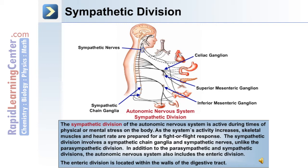In addition to the parasympathetic and sympathetic divisions, the autonomic nervous system also includes the enteric division. The enteric division is located within the walls of the digestive tract.